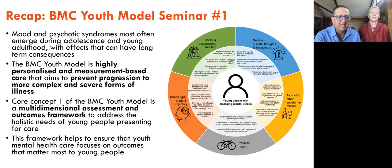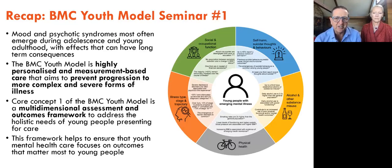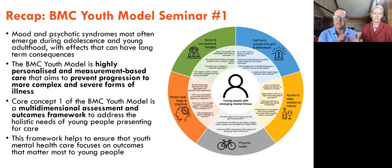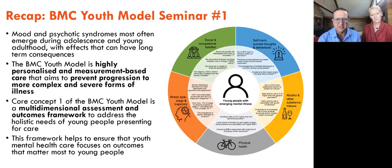Just to recap: in the first of the series, we focused on the dimensions important to understanding the common mood and psychotic syndromes that most often emerge during adolescence and young adulthood, and then tend to go on and have long-term consequences. There are key elements to the model we propose. Firstly, it's highly personalised. Second, it's measurement-based. It tries to treat the problem as it is now, but also prevent progression to more severe forms of illness. One of the core concepts is that of multi-dimensional assessment.